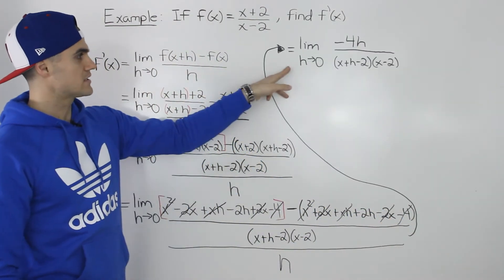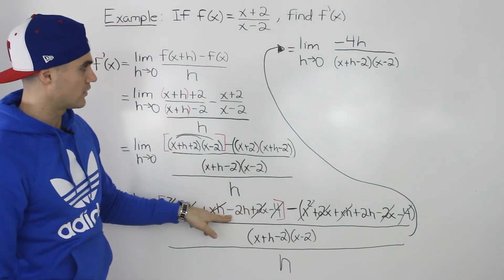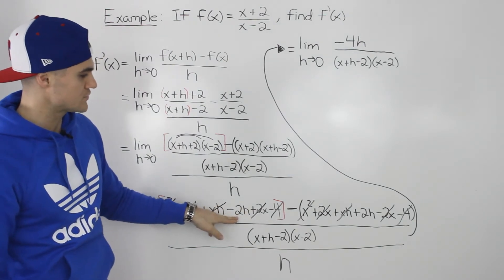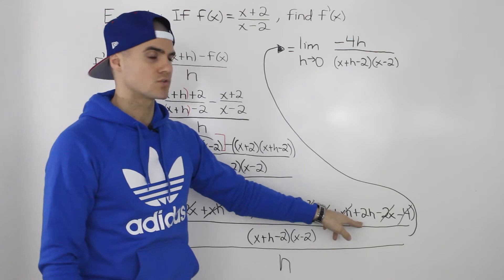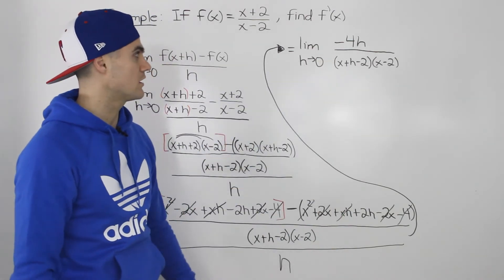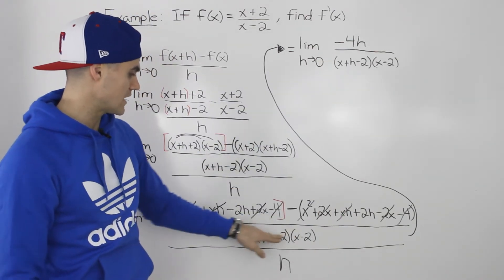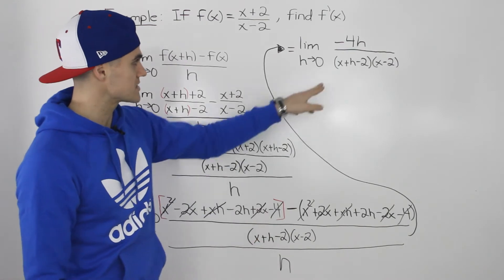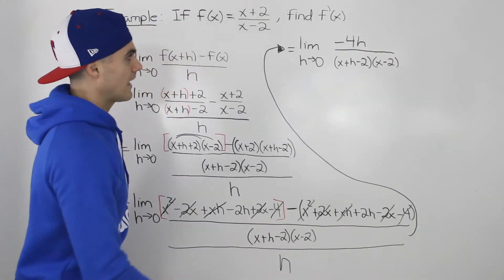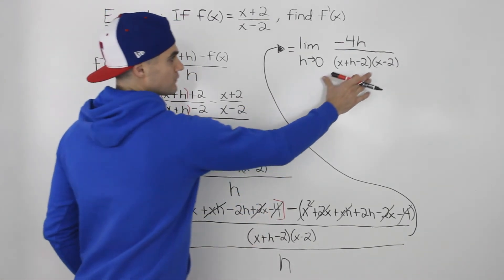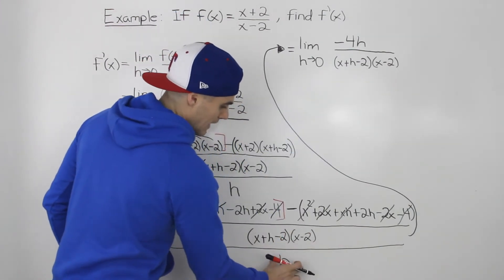When we simplify that numerator, all we're left with is -2h minus 2h, which gives us -4h in the numerator. We're still left with the denominator (x+h-2)(x-2), and we still have to divide this whole expression by h.